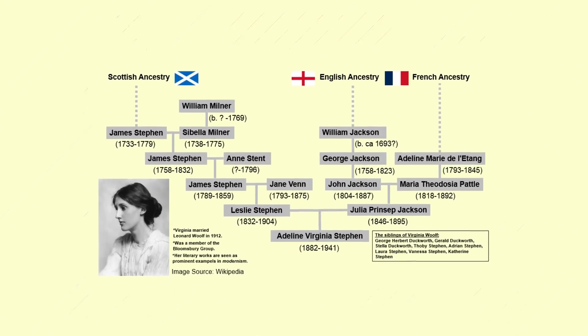Here's a fairly simple chart, but I wanted to feature it because this particular creator has done a lot of different charts, mostly of famous individuals — whether they be authors, politicians, or otherwise. This one is about Virginia Woolf, a very important author, and I really appreciated her getting some attention. You can see how this chart shows she has not only Scottish ancestry but also some English and French. This creator has made a lot of charts, and I just really appreciate the work that person has done.